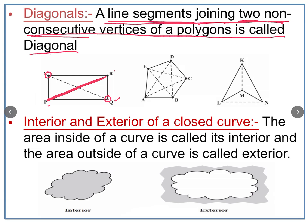Similarly, for Q, its adjacent vertices are R and P, so S is its non-adjacent vertex — joining Q-S gives another diagonal. For pentagon ABCDE, the diagonals from A are A-C and A-D; from B they are B-D and B-E; from C they are C-E and C-A, and so on. In the next figure there are only two diagonals — for vertex L, its adjacent vertices are M and K, so the only non-adjacent vertex is N, giving diagonals L-N and K-N.